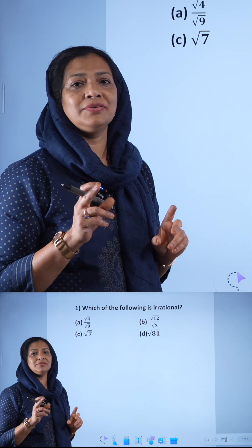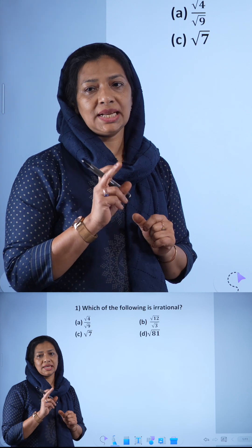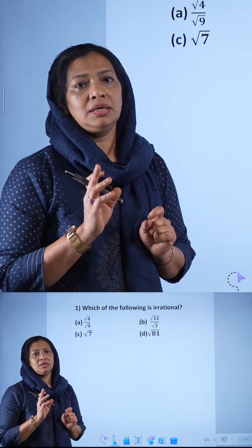The rational number we can write in the form of p by q, but irrational number we cannot write in the form of p by q.